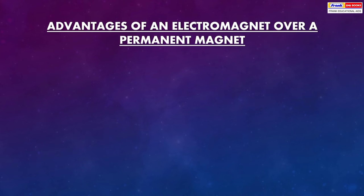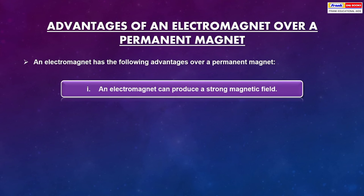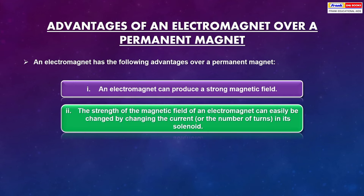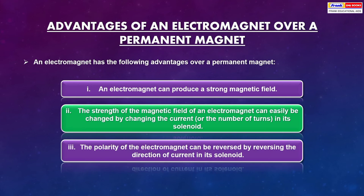Advantages of an electromagnet over a permanent magnet: First, an electromagnet can produce a strong magnetic field. Second, the strength of a magnetic field of an electromagnet can easily be changed by changing the current in its solenoid. The polarity of an electromagnet can be reversed by reversing the direction of current in its solenoid.